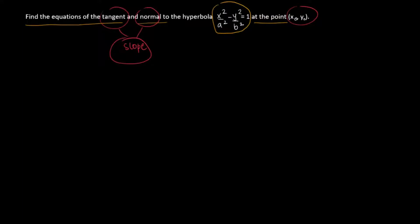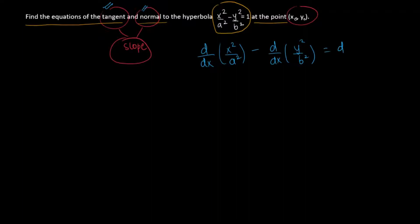First of all, let's start by differentiating this function. We will differentiate to get the slope of the tangent and then the slope of the normal. Taking d/dx of the whole equation: d/dx of x squared over a squared minus d/dx of y squared over b squared is equal to d/dx of 1.